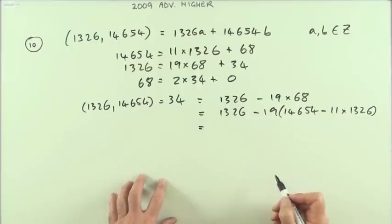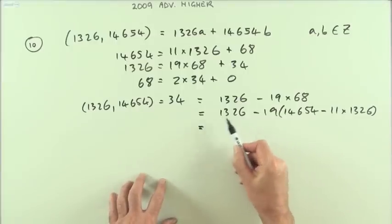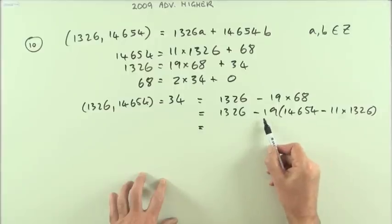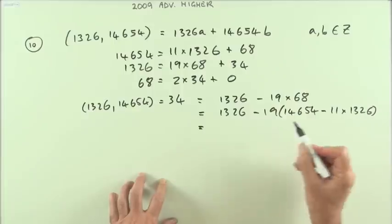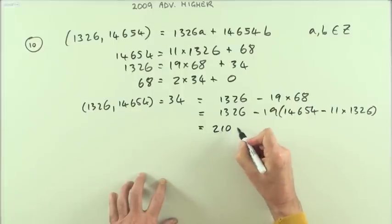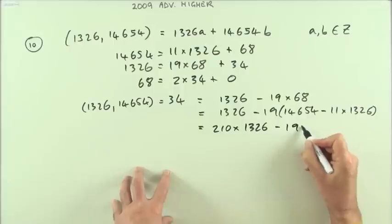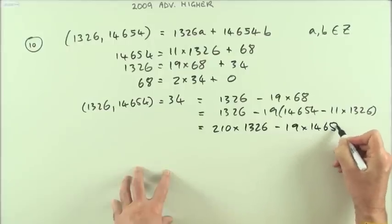So I've got one lot here, and then negative 19 times negative 11 will be 209 lots of it, plus the 1 is 210 lots of 1326, minus 19 times 14654.